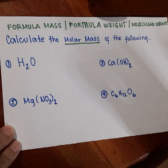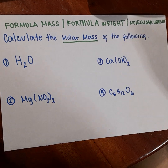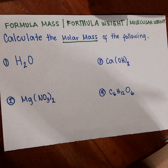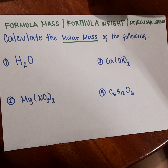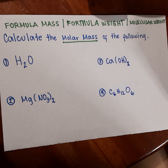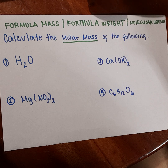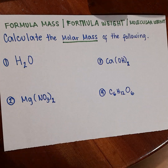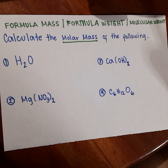In order to calculate the molar mass of a compound, the first thing you need to do is find the formula mass. Remember that the molar mass of a substance is equal to the formula mass. The formula mass in atomic mass units is equal to the molar mass, and the molar mass of a substance is the mass in grams of one mole of that substance.